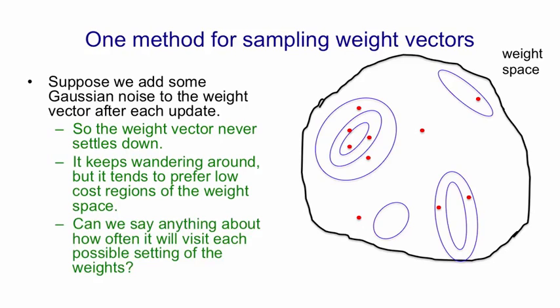An important question is whether we can say anything about how often the weights will visit each point in that space. So the red dots are meant to be samples we took of the weights as we wandered around the space. And the idea is we might save the weights after every 10,000 steps. And if you look at those red dots, a few of them are in high-cost regions, because those regions are quite big. The deepest minimum has the most red dots, and other minima also have red dots. The dots aren't right at the bottom of a minimum, because they're noisy samples.